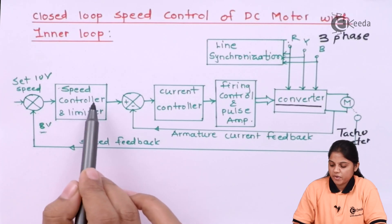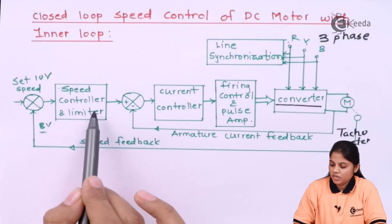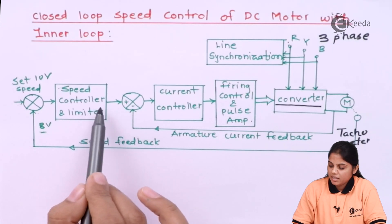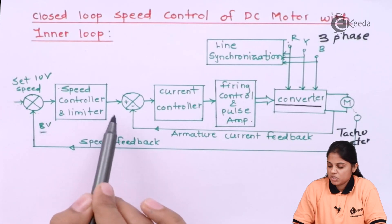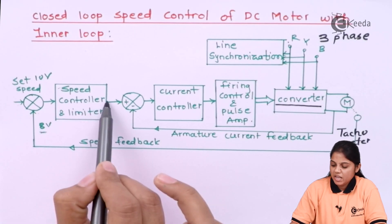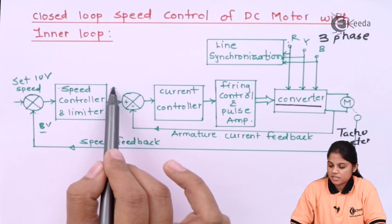So if that is the input fed to the speed controller, what command will it give you? It will show you that my armature current should be increased. Because I want to increase the speed, so my armature current should be increased. So it will increase the amount of current. Here it will increase the amount of current.